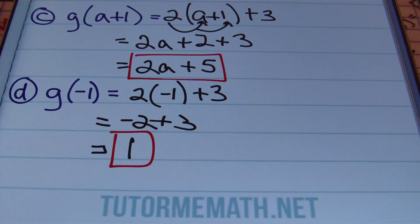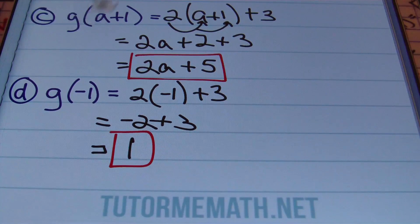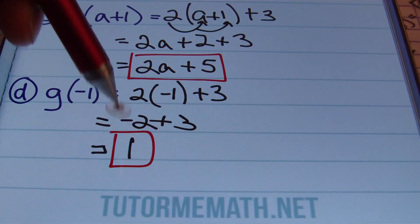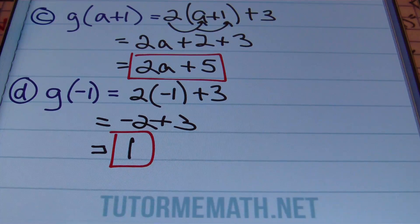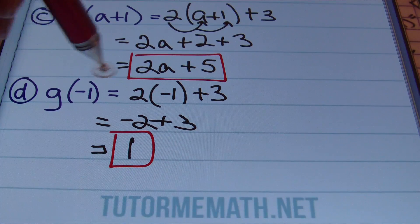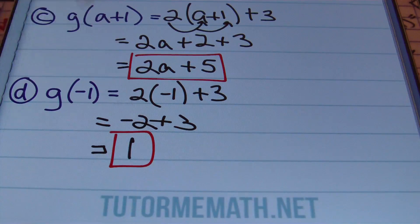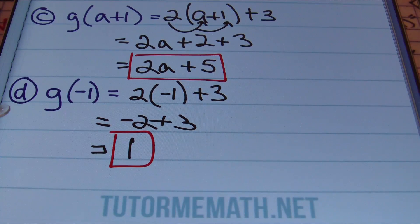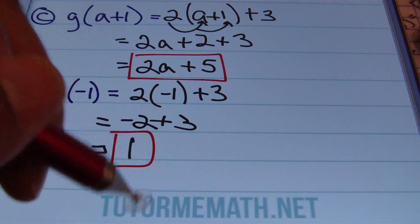When I plug negative 1 into the original equation, my y value equals 1. As a point, I would have negative 1, 1. So if you had to write this as an ordered pair, your point would be negative 1, 1.